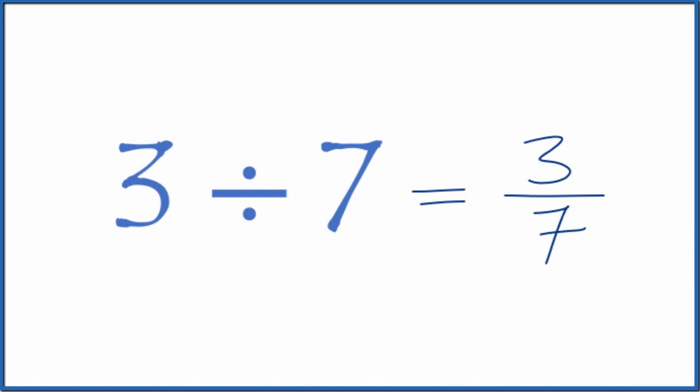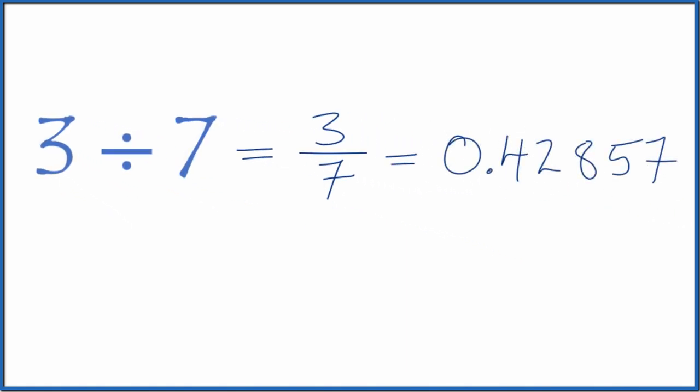We could also, if we wanted, just divide 3 by 7 on a calculator. We'd end up with... and this number keeps going, so let's round this to 0.429.